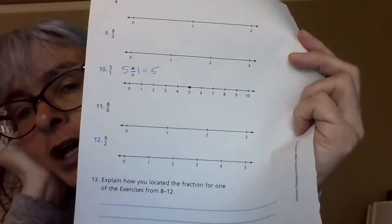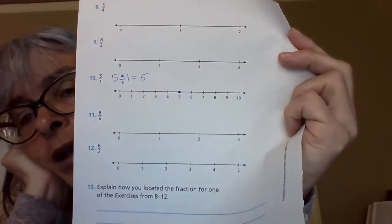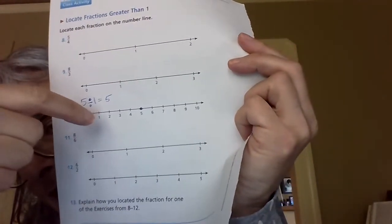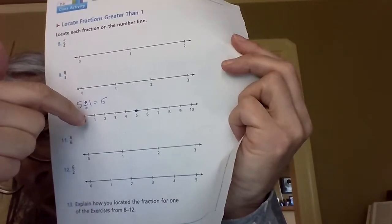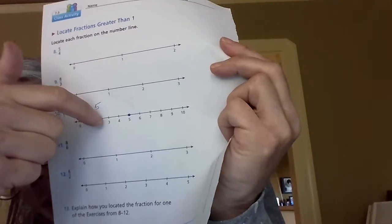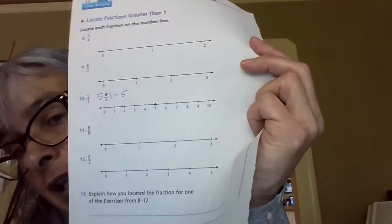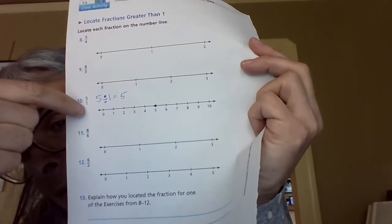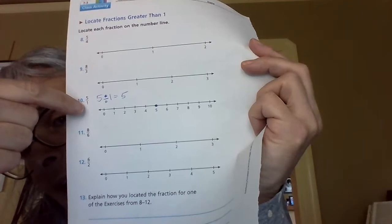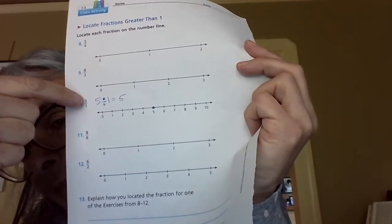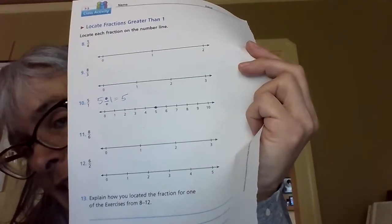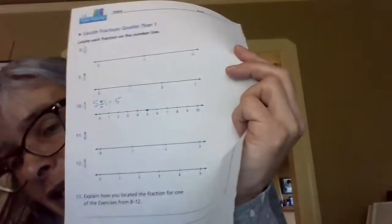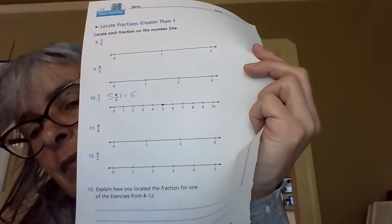The mistake most third graders make is they think they're supposed to be thinking fractions, so they read five over one as one fifth and start trying to break everything into tiny pieces — but luckily we don't have to. This is five wholes, not one fifth. Whenever you have one as your denominator, you're always looking at a whole number: six over one is six, seven over one is seven, a hundred over one is a hundred.